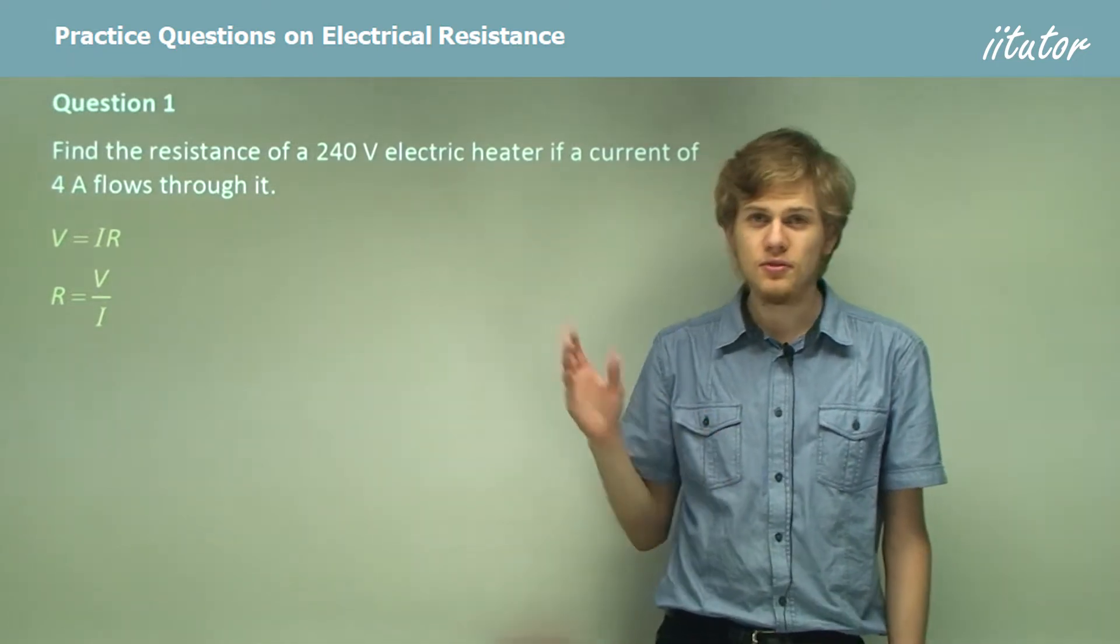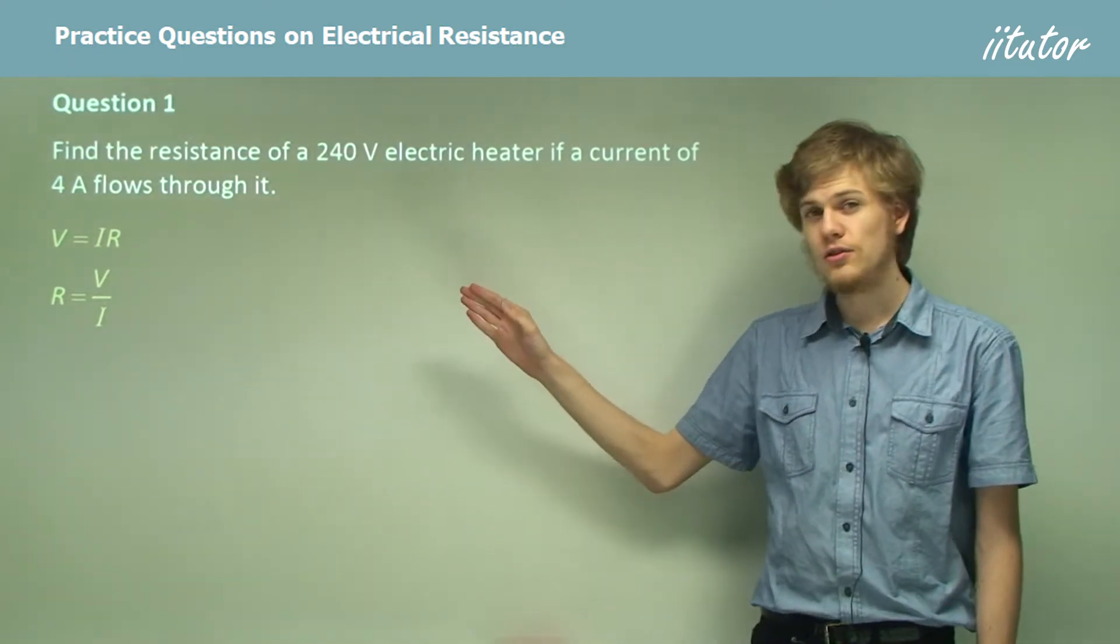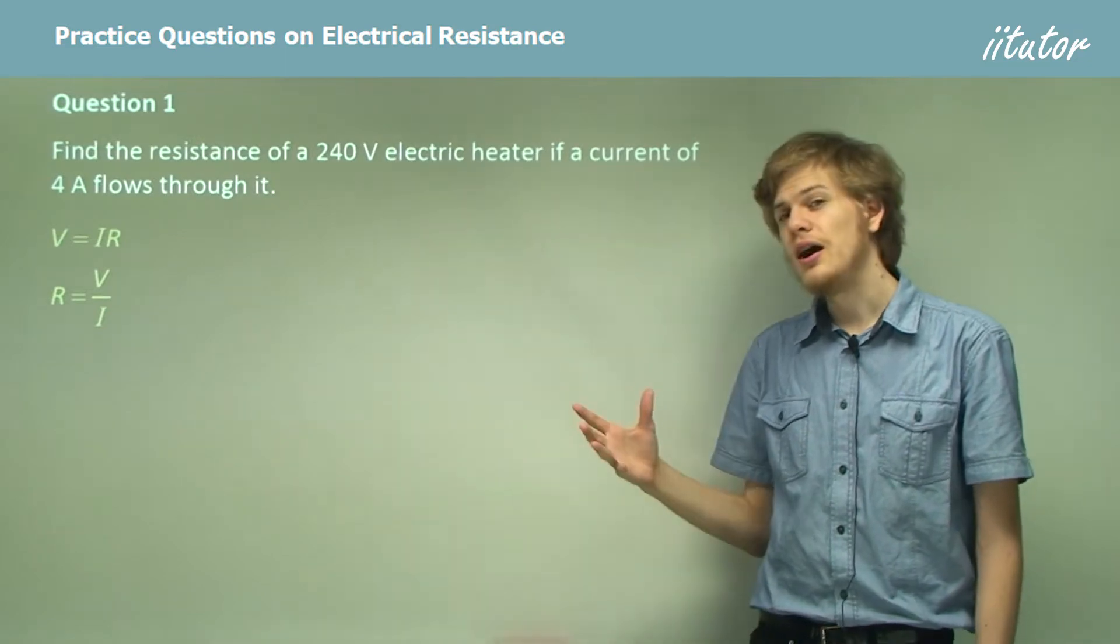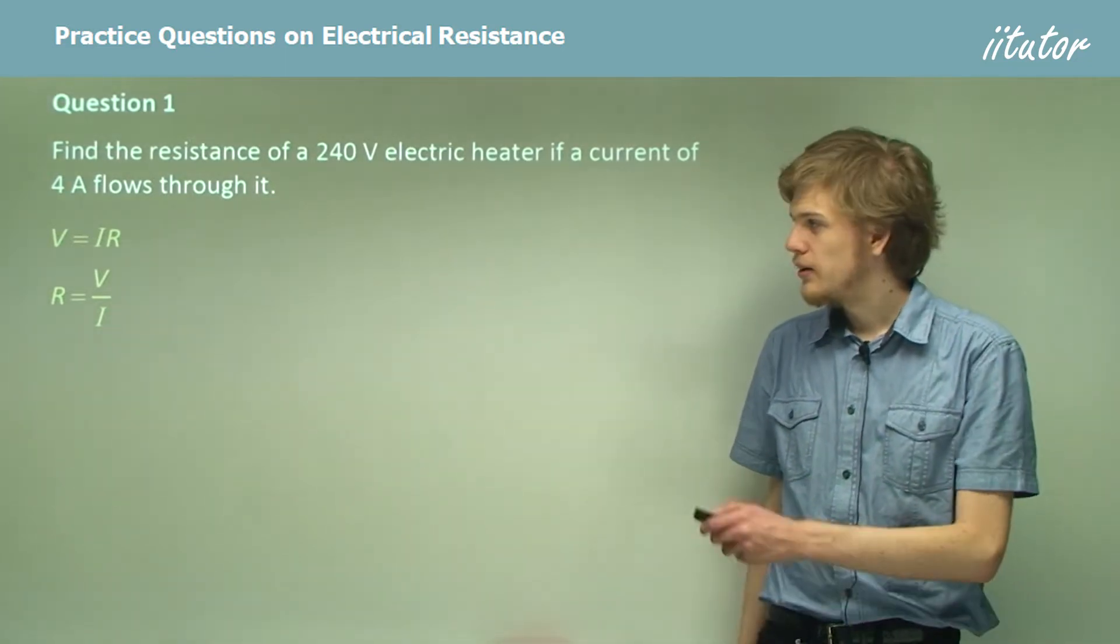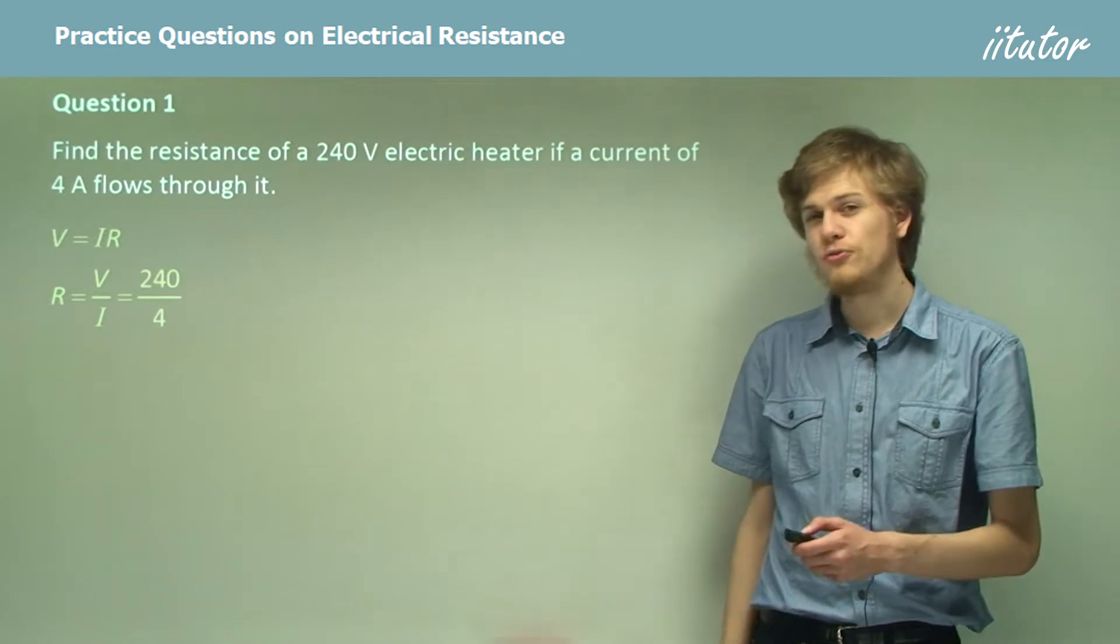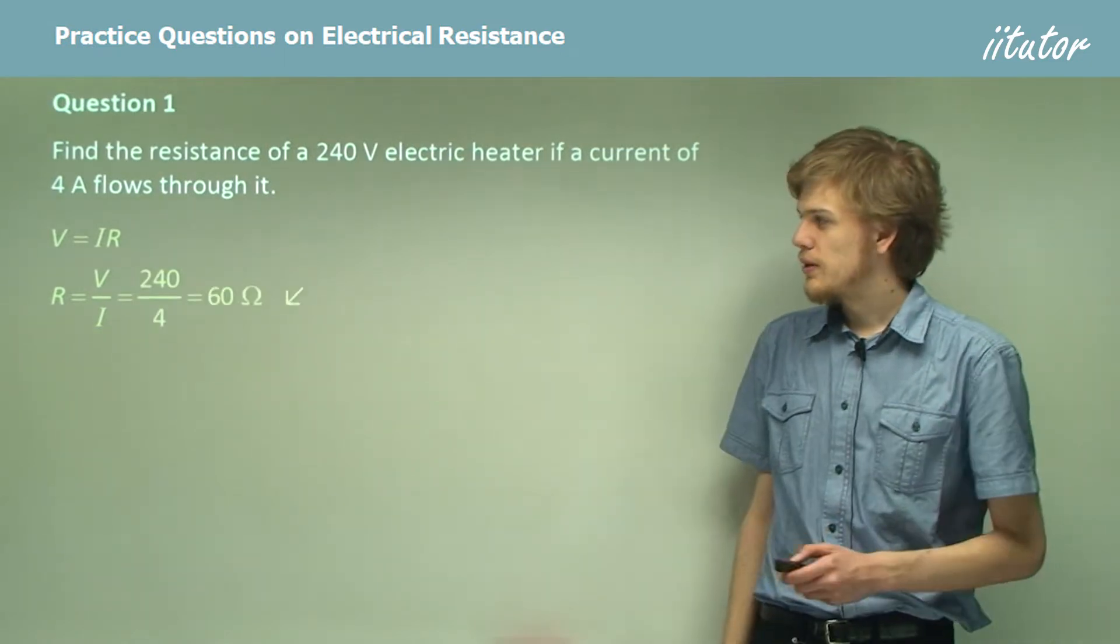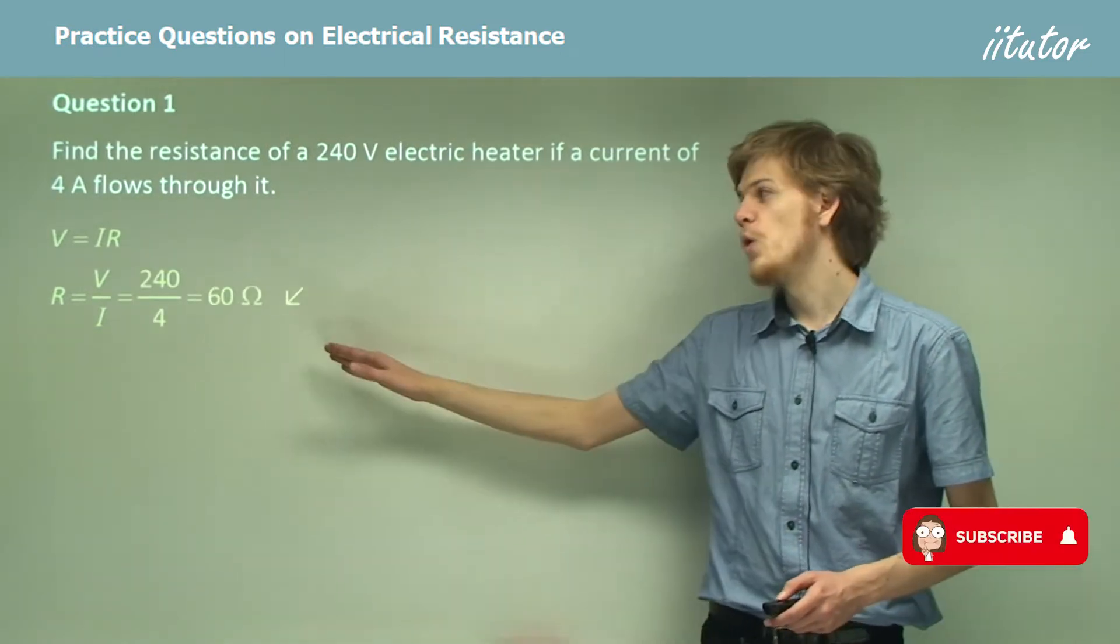R, the resistance of the heater, equals V, the voltage through it, divided by I, the current that it draws. So substituting in our numbers we have 240 over 4 which gives us a resistance of 60 ohms.